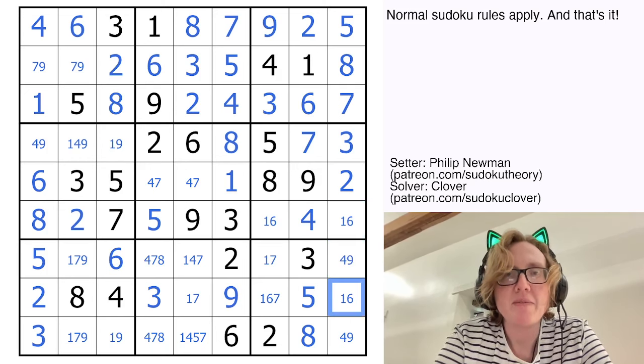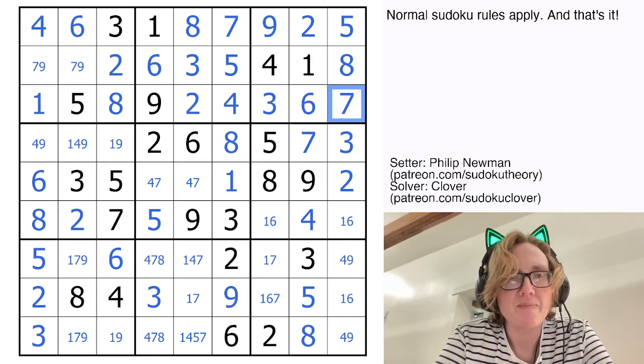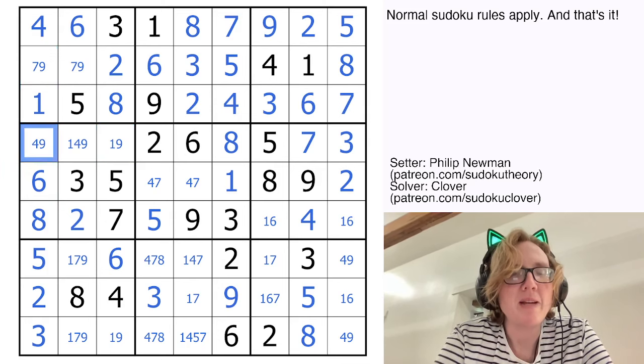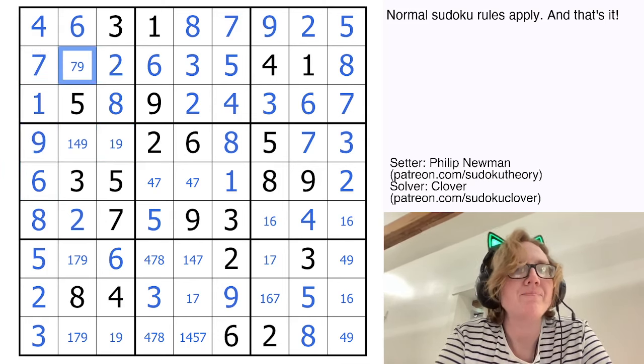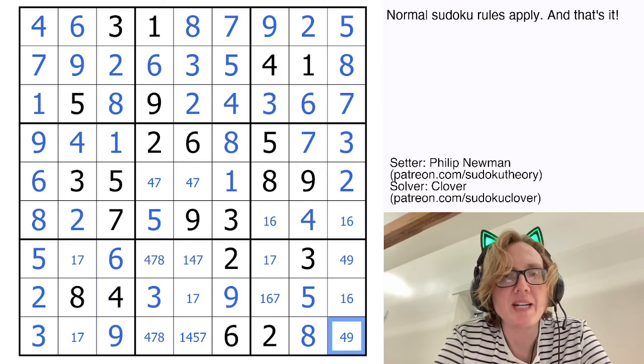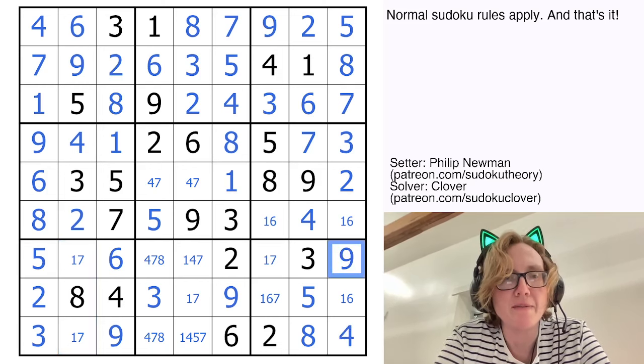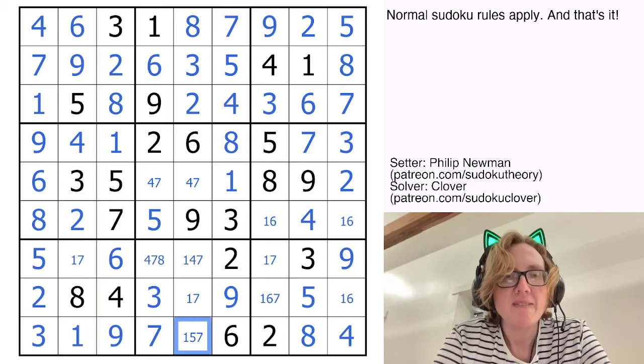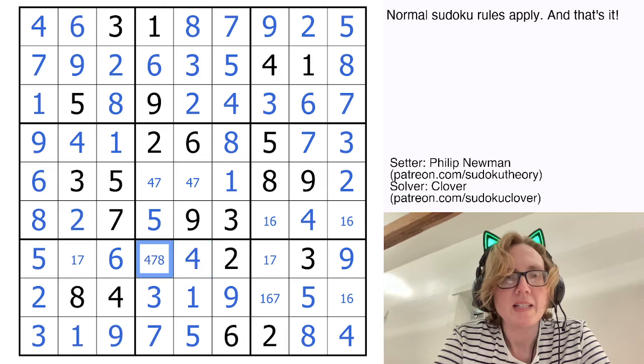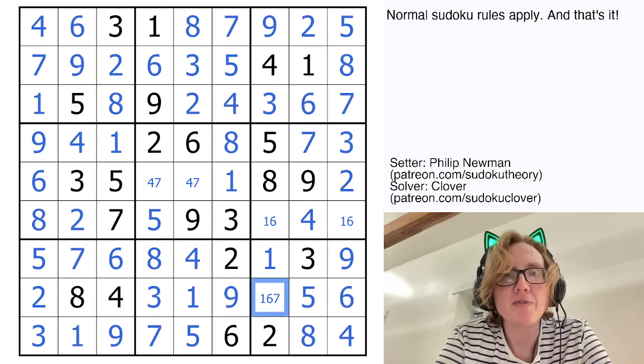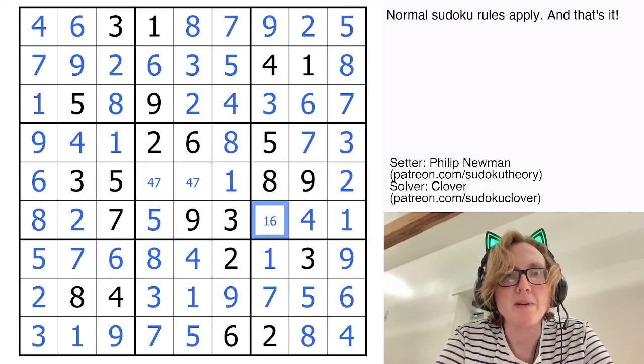And that also can't be a 7 because of the 7 higher up the column. We should be just about finished here. In this column, we have a 4 already. And that resolves this region, bounces down, gives us a 9 in this region. The 9 resolves my 4, 9 pair, and the 4 eliminates some stuff there. That's a 7. And I believe we are just about done just doing some cleanup with our pencil marks.